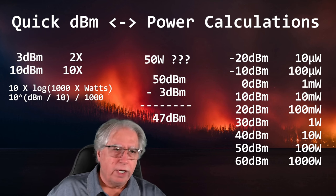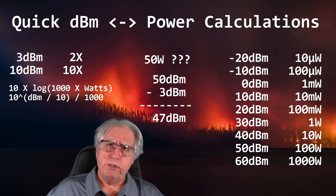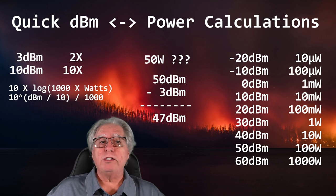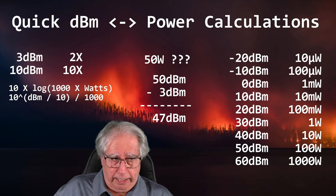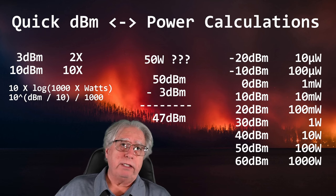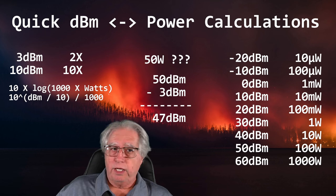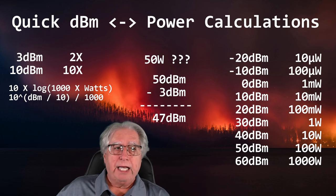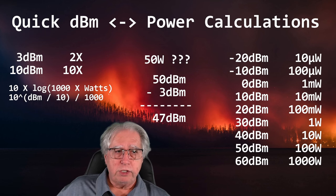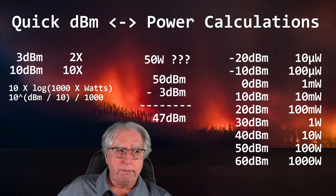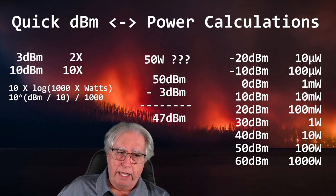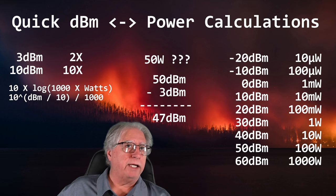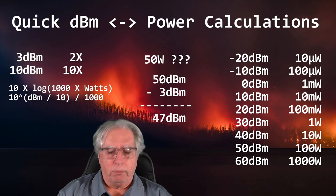One last example: I have an HT that puts out two watts. I know one watt is 30 dBm, and doubling it adds 3 dBm. So one times two is two watts — take 30 plus 3 — and two watts is 33 dBm. This time we went up.